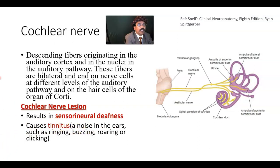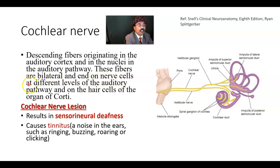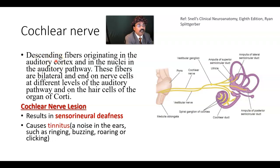There are also descending fibers originating in the auditory cortex — areas 41 and 42 in the superior temporal gyrus — and in the nuclei of the auditory pathway. These fibers are bilateral and end on nerve cells at different levels of the auditory pathway and on the hair cells of the organ of Corti. The purpose of the descending fibers is to filter unnecessary noise, sharpen sound, and enable precise and sharp sound perception.